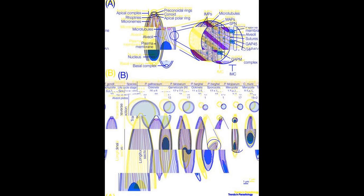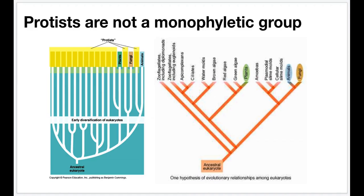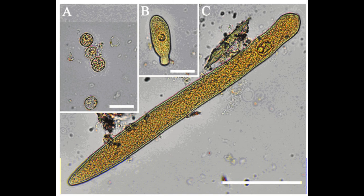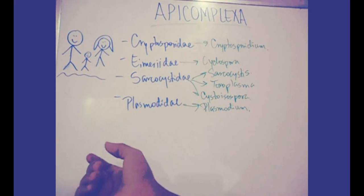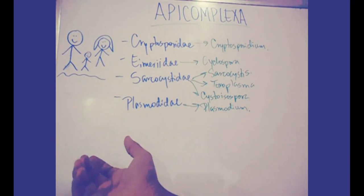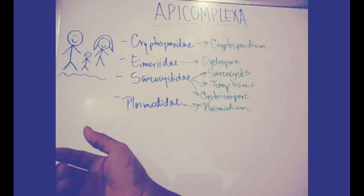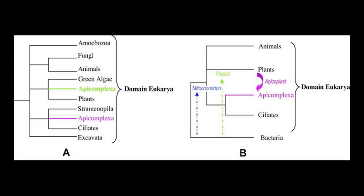Apicomplexa: All apicomplexans are obligate parasites for some portion of their life cycle, with some parasitizing two separate hosts for their asexual and sexual stages. Typically, a host is infected via an active invasion by the parasites, which divide to produce sporozoites that enter its cells.